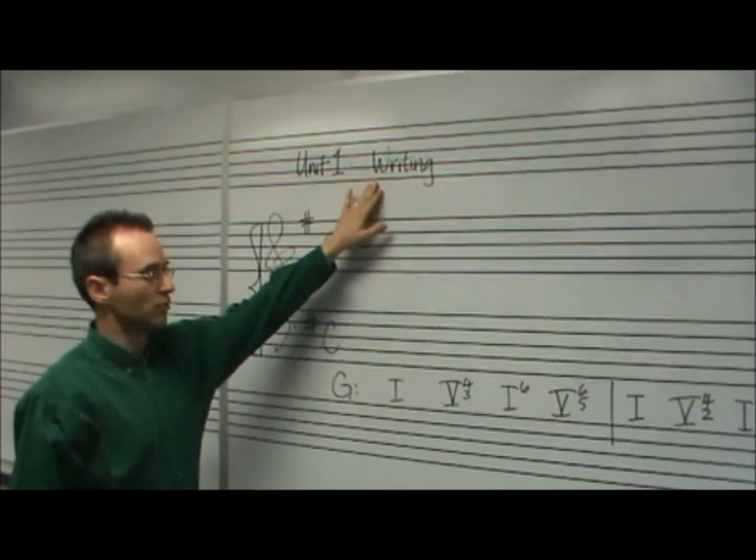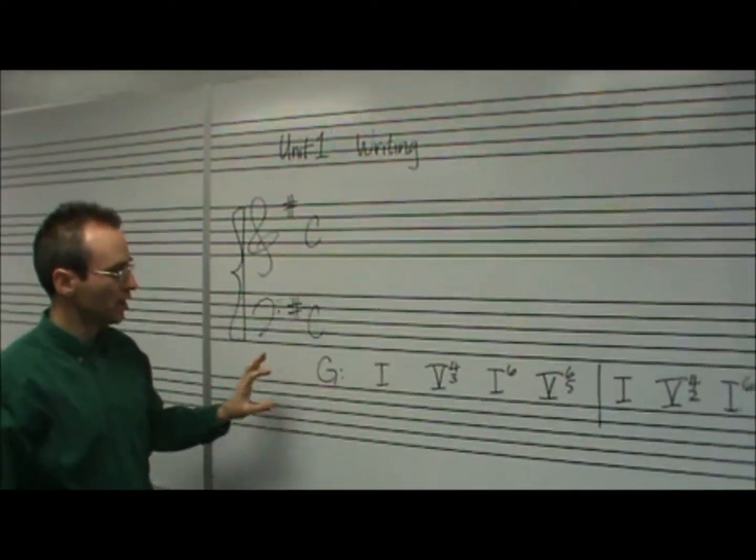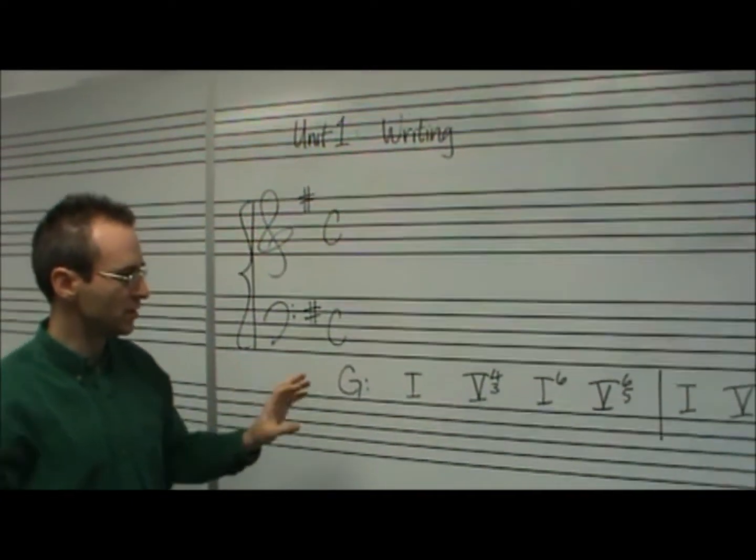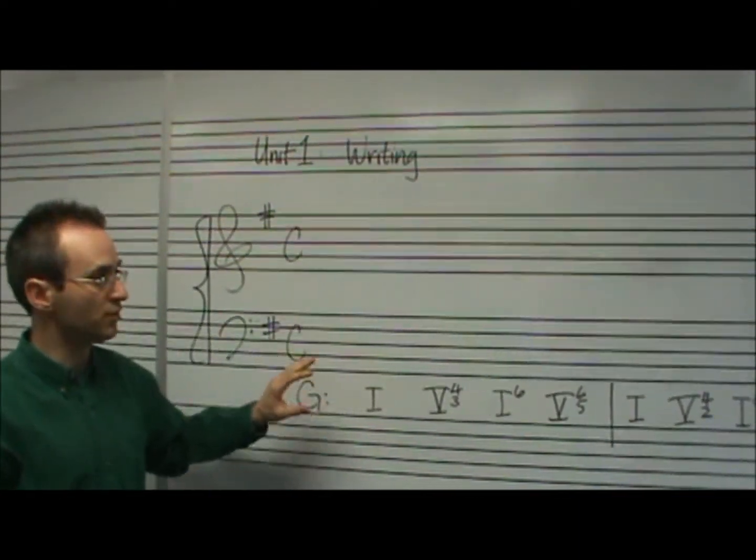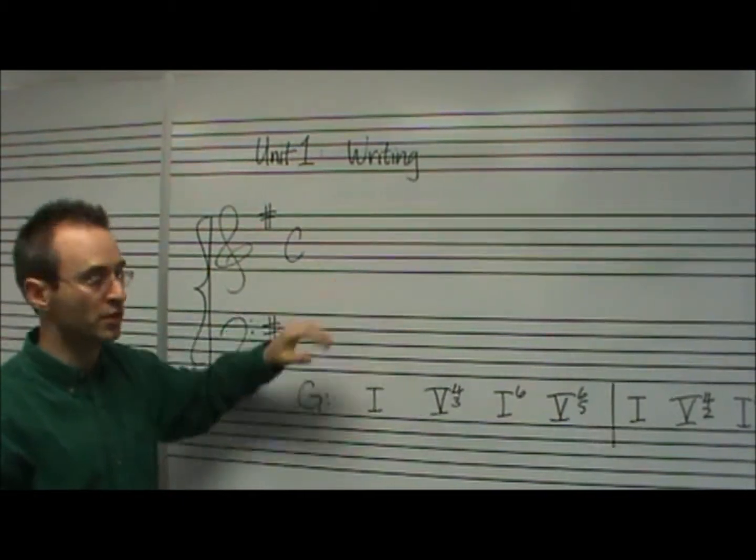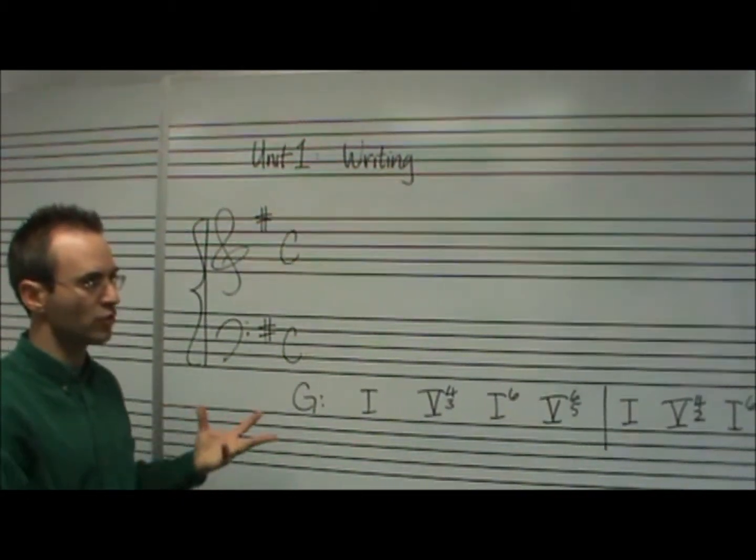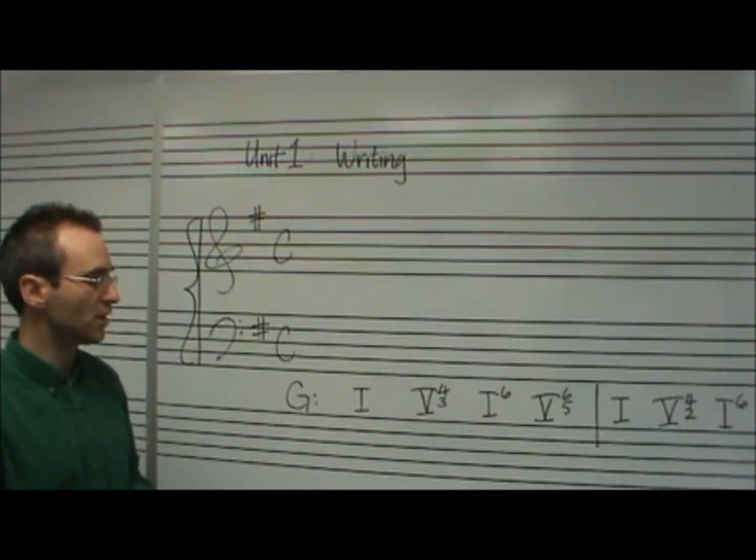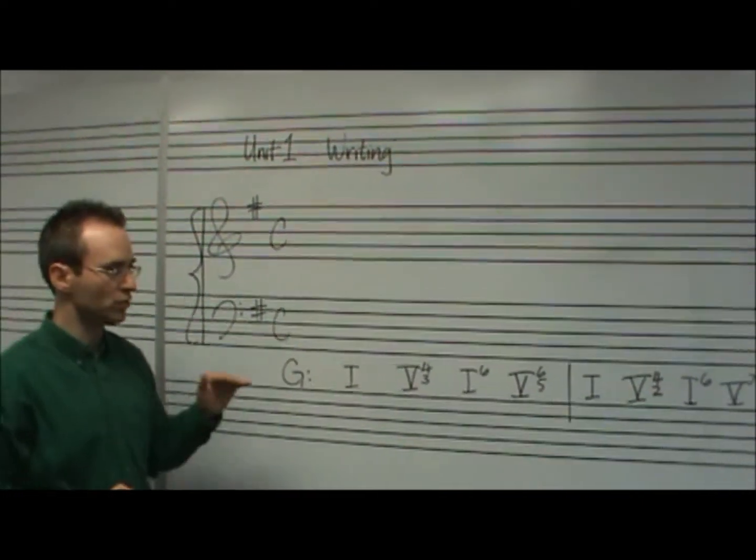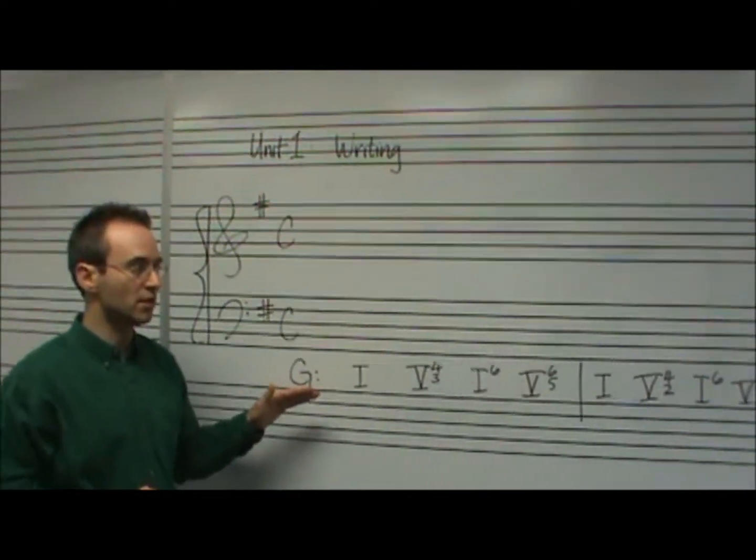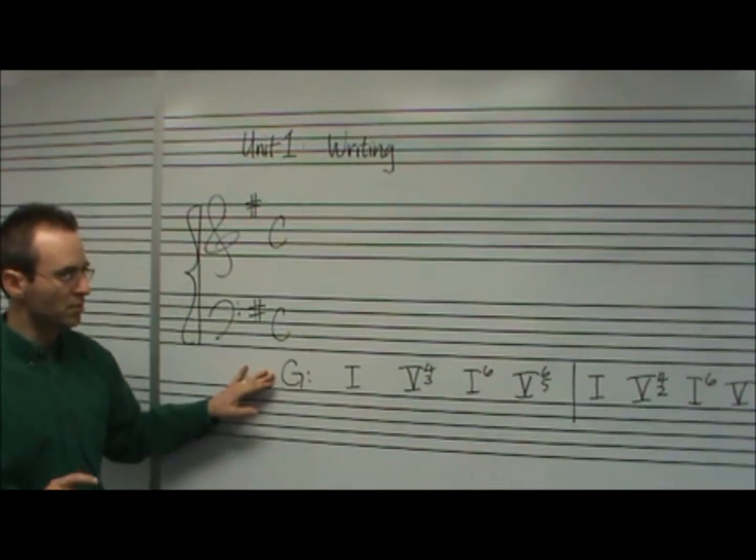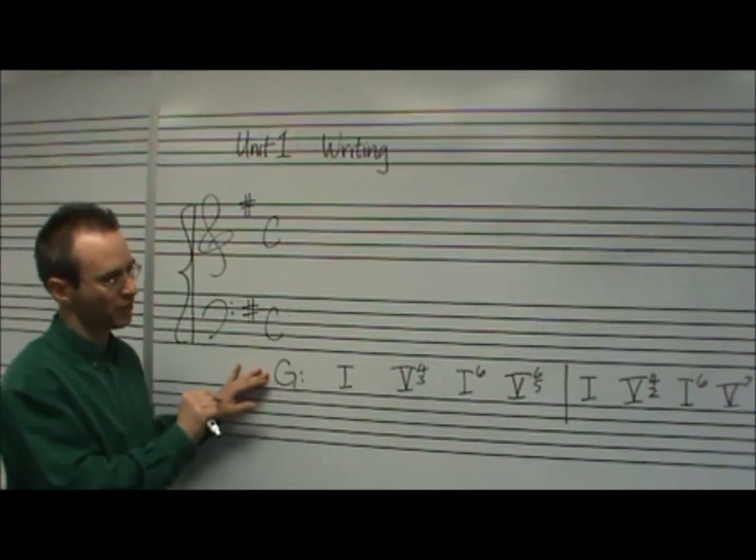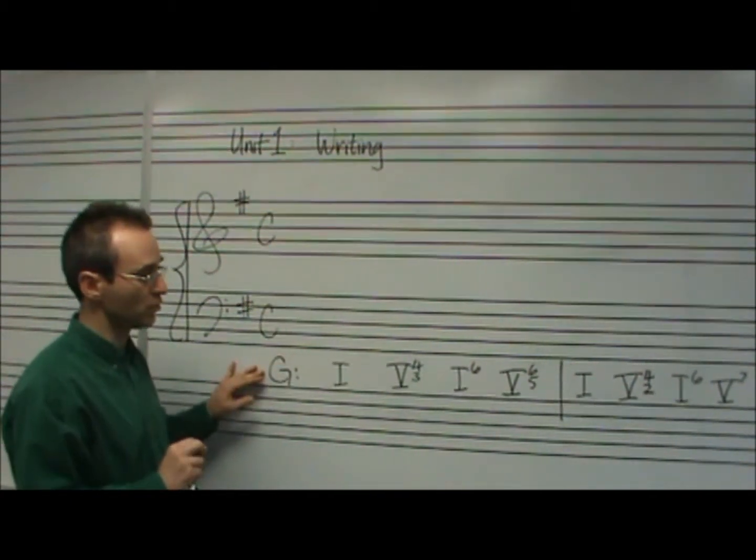This is Unit 1 Writing Assignment, the very first one. The idea here is to take Roman numerals and figures and turn them into, first of all, outer voice counterpoint and then full chords, four parts. As a first step, let's take these Roman numerals and figures and create a bass line. We're in G major and if we remember what Roman numeral and figure goes with what bass note, we're going to go really fast.